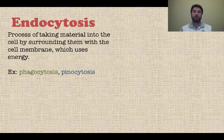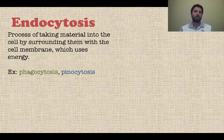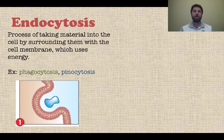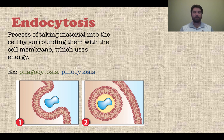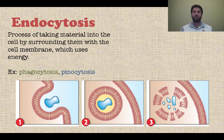Another type of active transport is endocytosis. Endo means inside. This is the process of taking material into the cell by surrounding it with the cell membrane, and it uses energy. Examples are phagocytosis — cell eating — which takes in solid things, and pinocytosis — cell drinking — which takes in liquid. In a three-stage picture, you see a substance in blue, the cell membrane forming an enclosure around it, completing the enclosure and bringing it inside, then the membrane breaking down and releasing that substance into the cell.